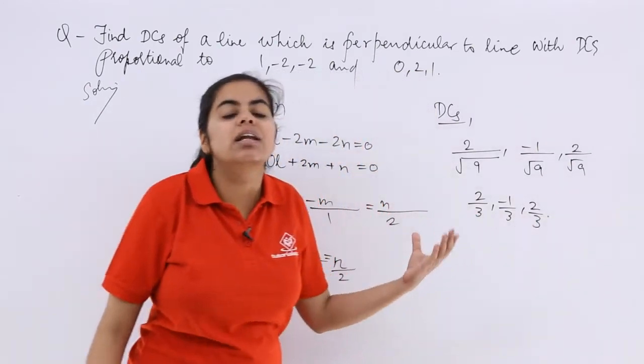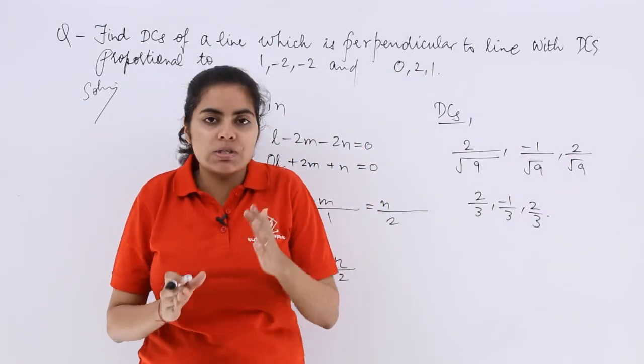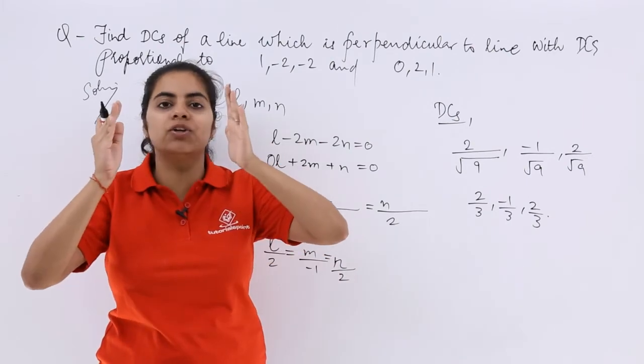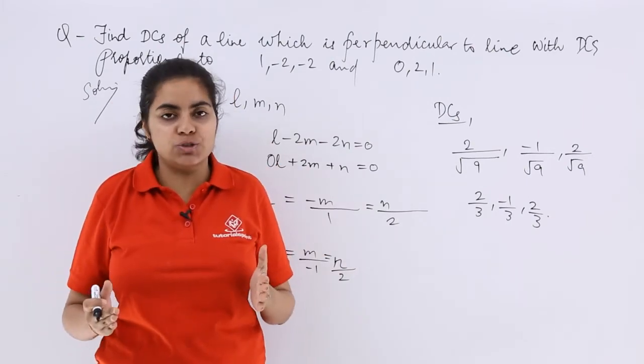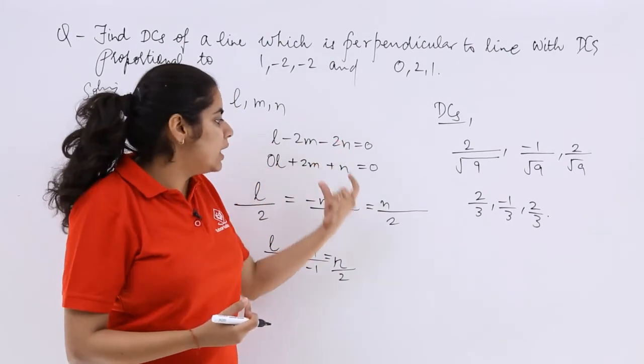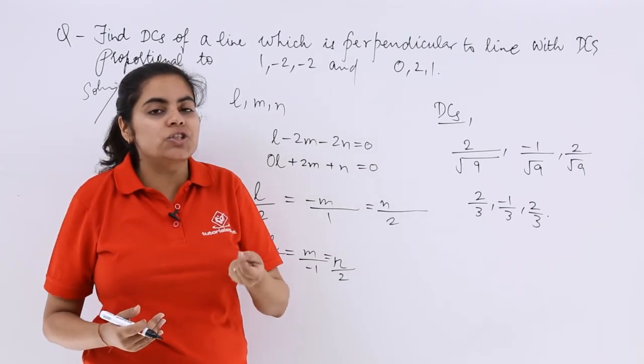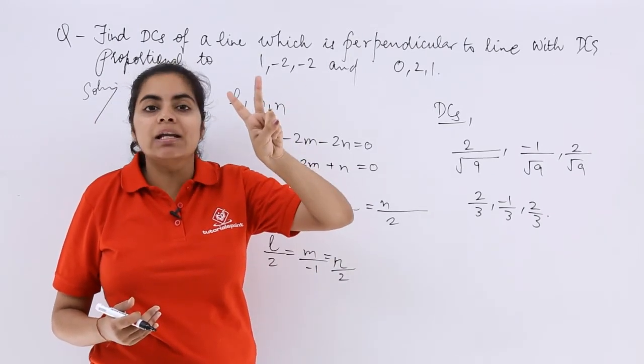So that is the required line's direction cosines. So see first of all, keep it very clear in your mind what is the direction cosine and ratio. And then see what formulas have to be used based on the condition of perpendicularity and parallelity.